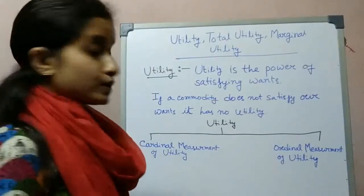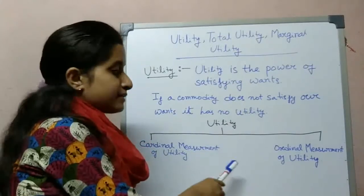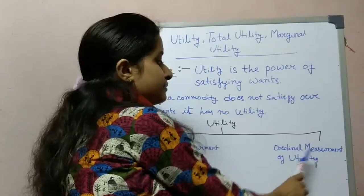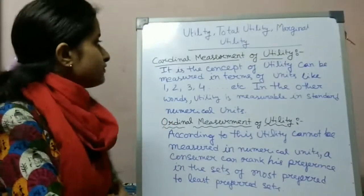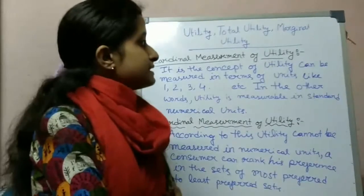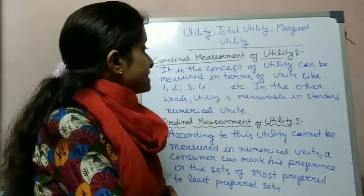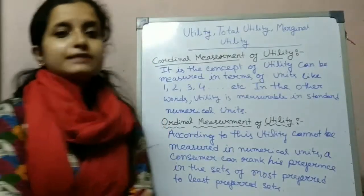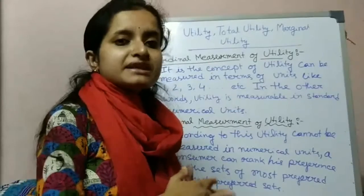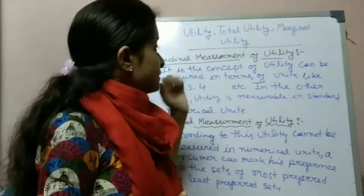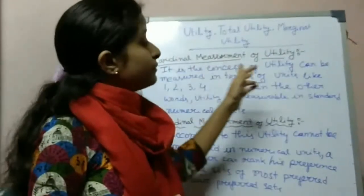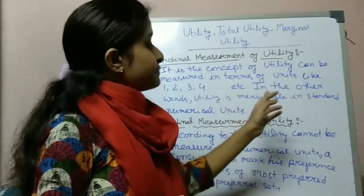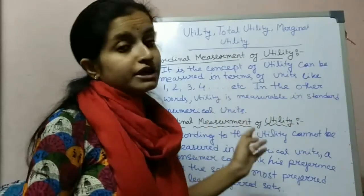Utility measurement is of two types: cardinal measurement of utility and ordinal measurement of utility. Cardinal measurement of utility means the concept of utility can be measured in terms of units like 1, 2, 3, 4 — that means in a numerical way we can measure utility. This is cardinal measurement of utility; the utility is measured in standard numerical units.